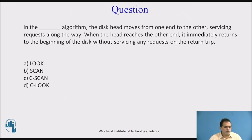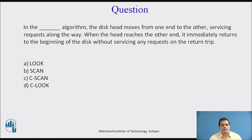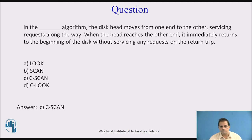Now let us see a question on this algorithm. In the blank algorithm, the disk head moves from one end to the other servicing requests along the way; when the head reaches the other end, it immediately returns to the beginning of the disk without servicing any request on the return trip. Options are: A. Look, B. Scan, C. C-Scan, D. C-Look. The answer is C-Scan. In the C-Scan algorithm, the disk head moves from one end to the other servicing requests, then immediately returns to the beginning without servicing any request on the return trip.